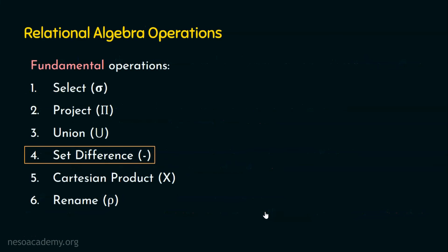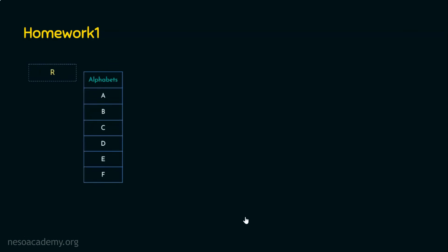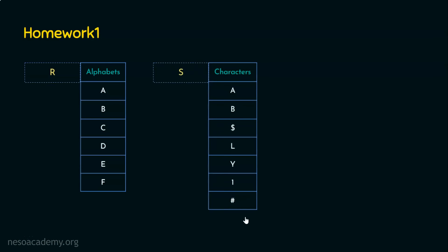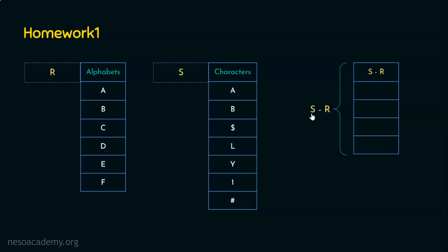I hope the set difference operation in relational algebra is clear. Let's see the homework questions. In this presentation we have two homework questions. For homework question number one, we are given the two relations R and S from the working example. In the presentation we computed R minus S. What you are required to find is S minus R. Perform the S minus R relational algebra operation and find out what elements this temporary relation will contain.